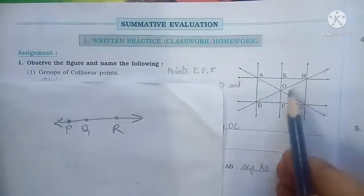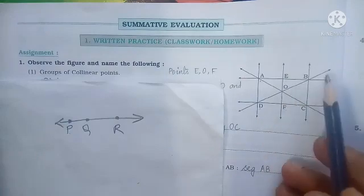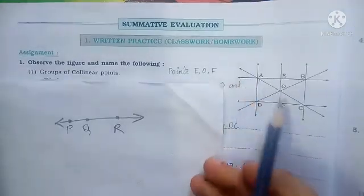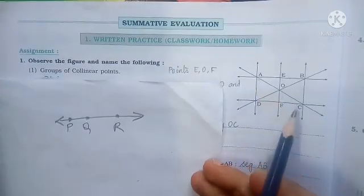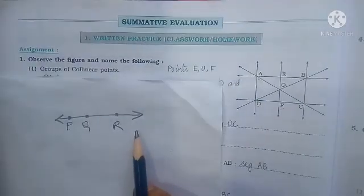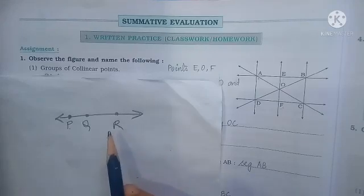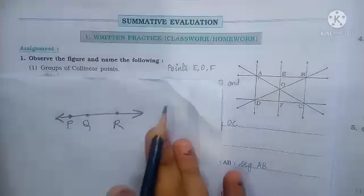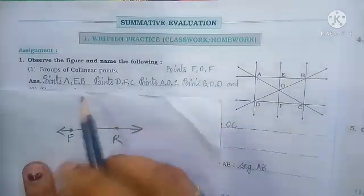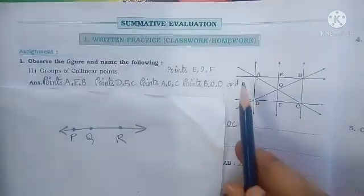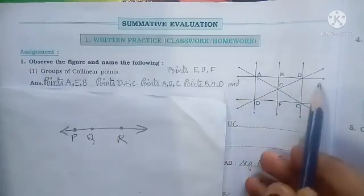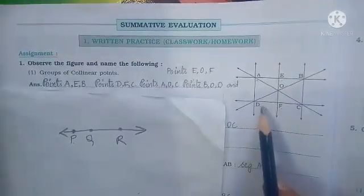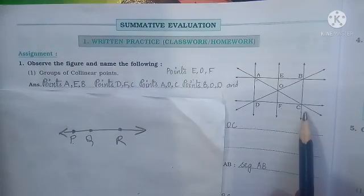Here is also a line, and point D, point O, and point B are lying on the same line. Also, point A, point O, and point C are lying on the same line. So keep in mind that any two or more than two points lying on the same line are your collinear points. So point A, E, B are on the same line — that is why they are collinear. Point D, F, C are also lying on the same line, so they are also collinear.